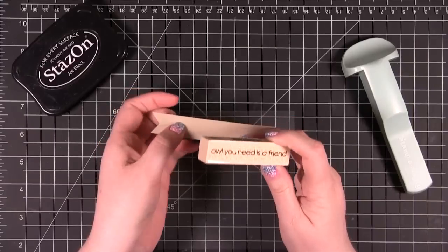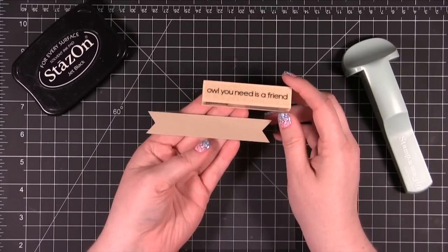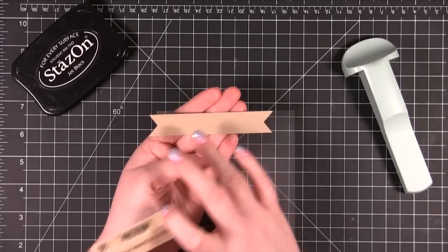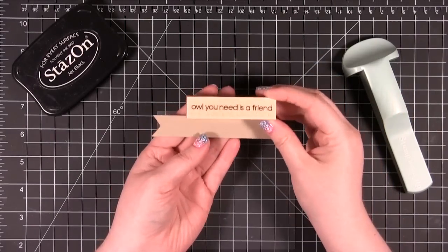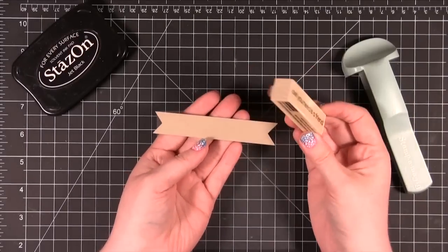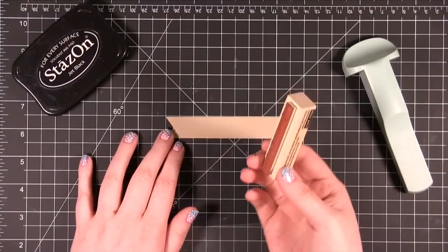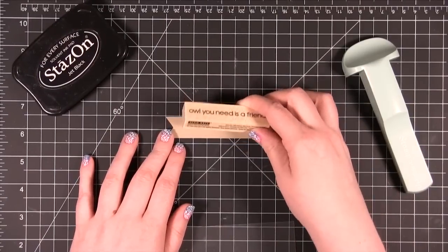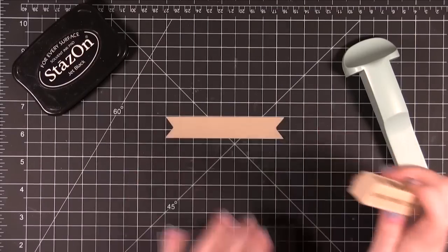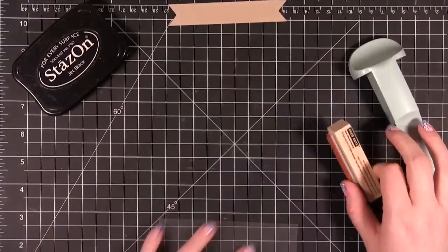The most common instance when you're going to need a Stampamajig is when you're using a wood block stamp and you need to have it positioned just perfectly on your paper. So I'm going to be putting this sentiment stamp on this little strip of card stock here. Normally this would be a really kind of iffy situation. You've got to lean down and kind of look underneath and try to get it lined up just right to make sure that it's on that little ribbon shape perfectly. Instead I'm going to use a stamp positioner.